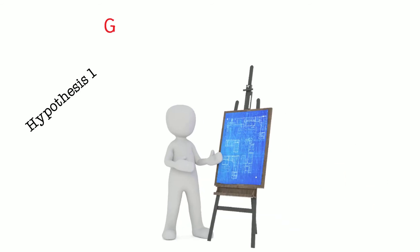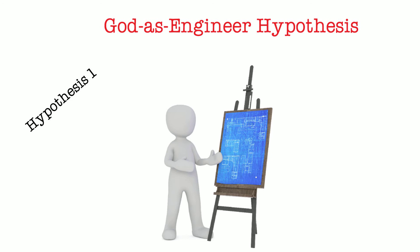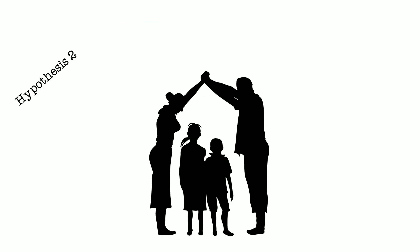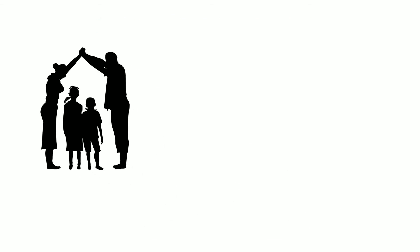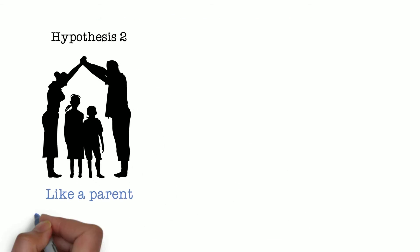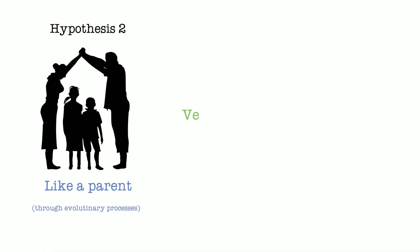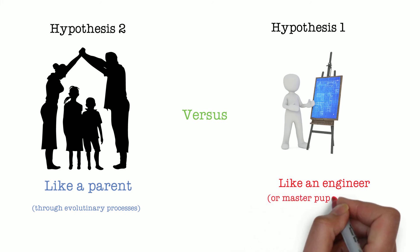This is hypothesis number one, the God as an engineer hypothesis. I'm going to suggest an alternative. Hypothesis number two, the God as parent hypothesis. According to this hypothesis, God in love establishes and maintains the conditions for human creation, but God does not dictate every step along the way. In hypothesis number two, God works through evolutionary processes like a parent. In hypothesis number one, God is like the Gepetto, putting all the parts together like a master puppet builder.